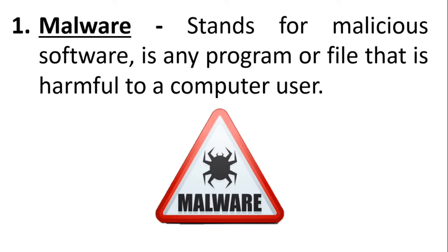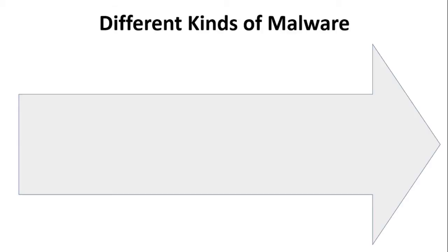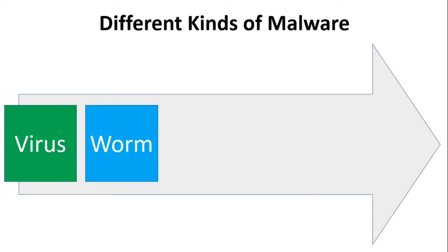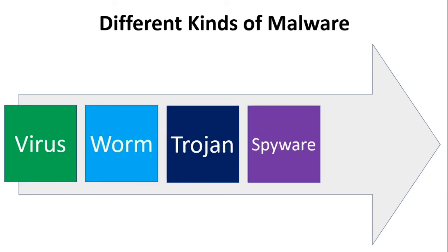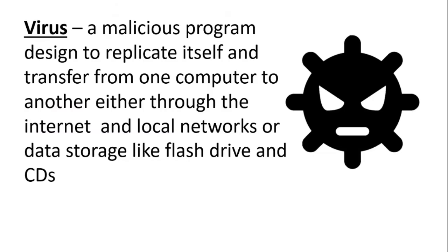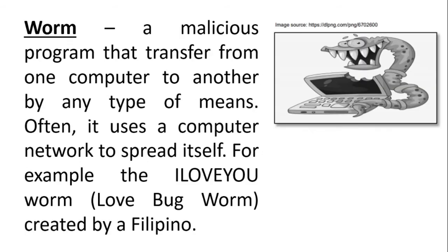Malware stands for malicious software and is any program or file that is harmful to a computer user. Different kinds of malware include: virus, worm, trojan, spyware, and adware. A virus is a malicious program designed to replicate itself and transfer from one computer to another, either through the internet and local networks or data storage like flash drives and CDs. A worm is a malicious program that transfers from one computer to another by any type of means, often using a computer network to spread itself.